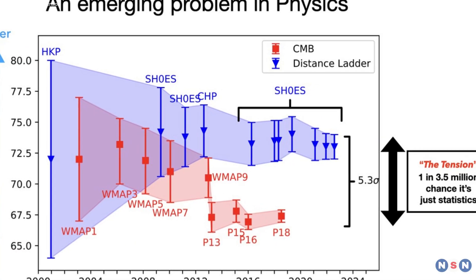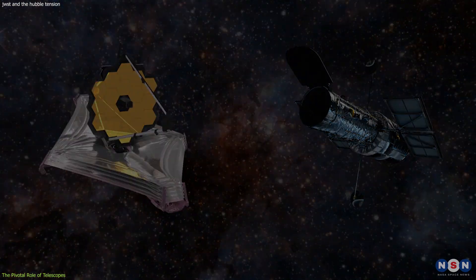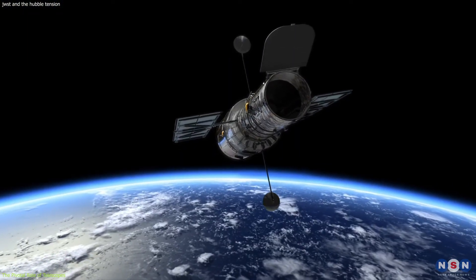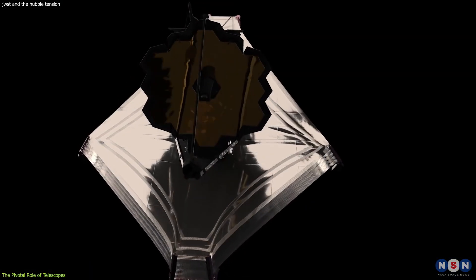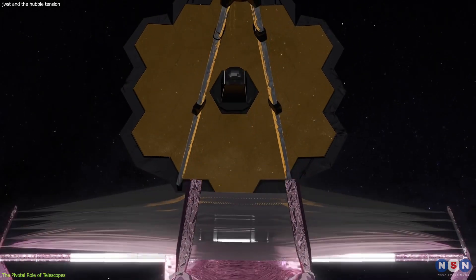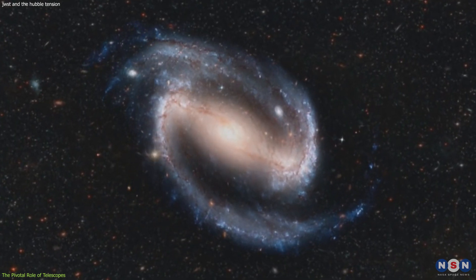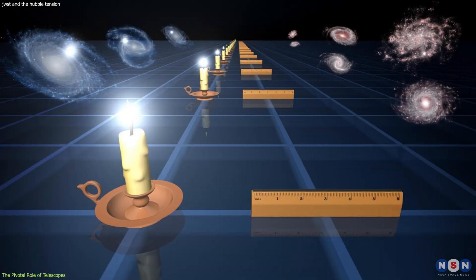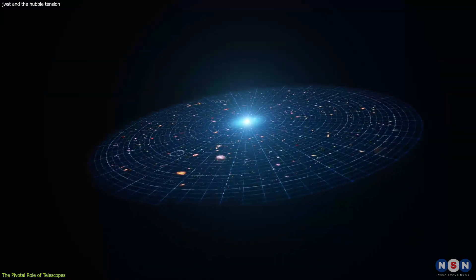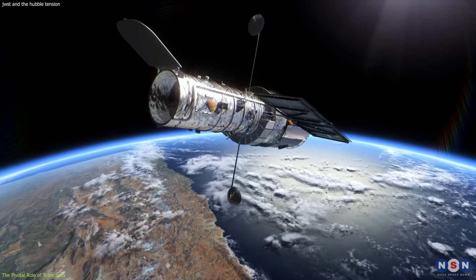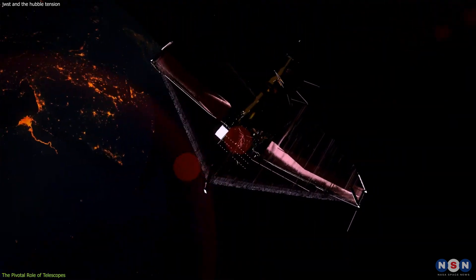In the quest to resolve the Hubble tension, Hubble and James Webb Space Telescopes have emerged as invaluable tools. For three decades, the Hubble Space Telescope has been at the forefront of measuring the universe's expansion rate. Enter the James Webb Space Telescope, which has recently confirmed the accuracy of Hubble's measurements. These telescopes use Cepheid variable stars and Type Ia supernovae as cosmic markers to measure distances and, consequently, the expansion rate.